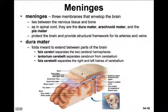The dura mater will fold inward and extend between parts of the brain, for example, between the longitudinal fissure. You can see here that the dura mater has extended down in there to form the falx cerebri. Then another enfolding happens between the cerebrum and the cerebellum, called the tentorium cerebelli. And then there's another sheet that separates the right and left halves of the cerebellum, called the falx cerebelli. When we dissect the brain in class, you'll have a chance to see how these membranes form the different extensions between the parts of the brain.